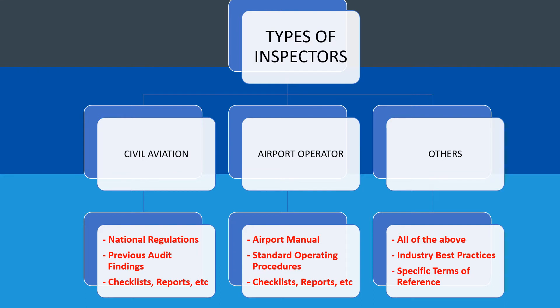When it comes to civil aviation and airport operator audits, everyone is coming with a specific set of checklists. These checklists are prepared from relevant documents, which include, for the CA, their national regulations, previous audit findings, checklists and reports that they have related to the airport.